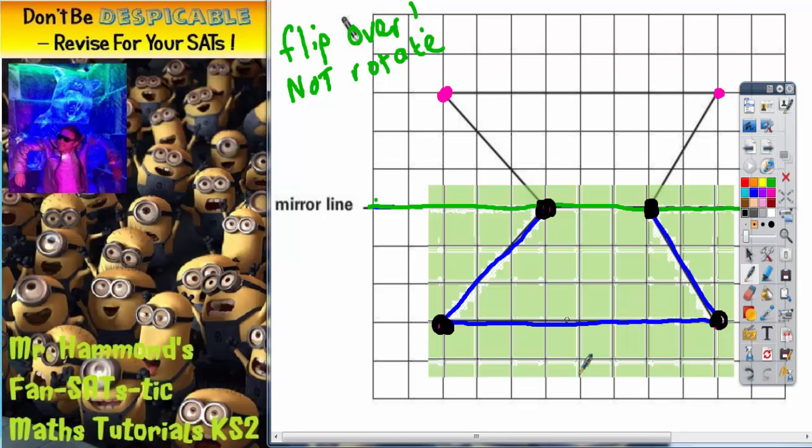So to recap method number one is to use a mirror. Look inside the mirror and draw the shape on the other side. Method number two is to count the distance from each corner to the mirror line and repeat that distance on the other side of the mirror line.